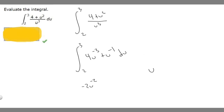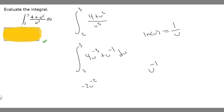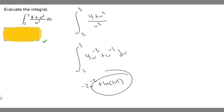For u to the minus 1, there's something important to know. We know that the derivative of ln(u) is 1 over u. Since u to the minus 1 is the same thing as 1 over u, the antiderivative of u to the minus 1 is the natural log of u. But we get the ln of the absolute value of u, because natural logs can only take positive numbers, so we write ln|u|.